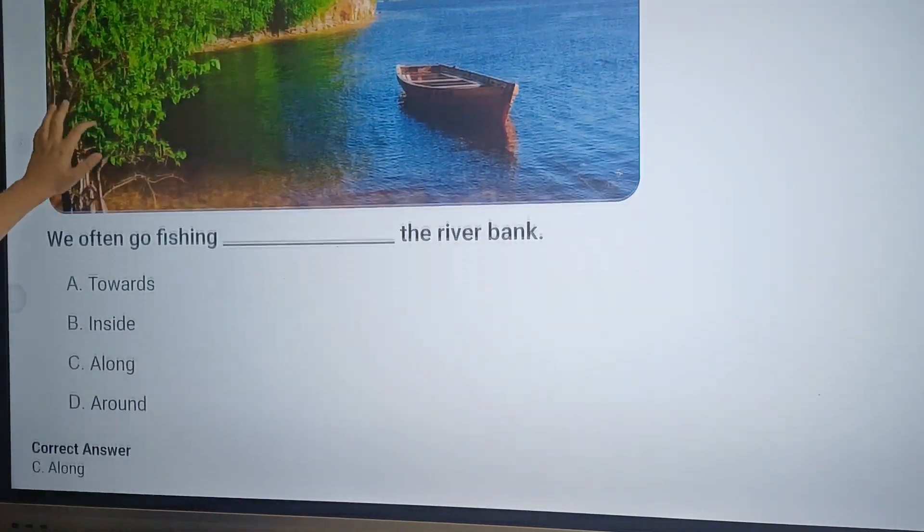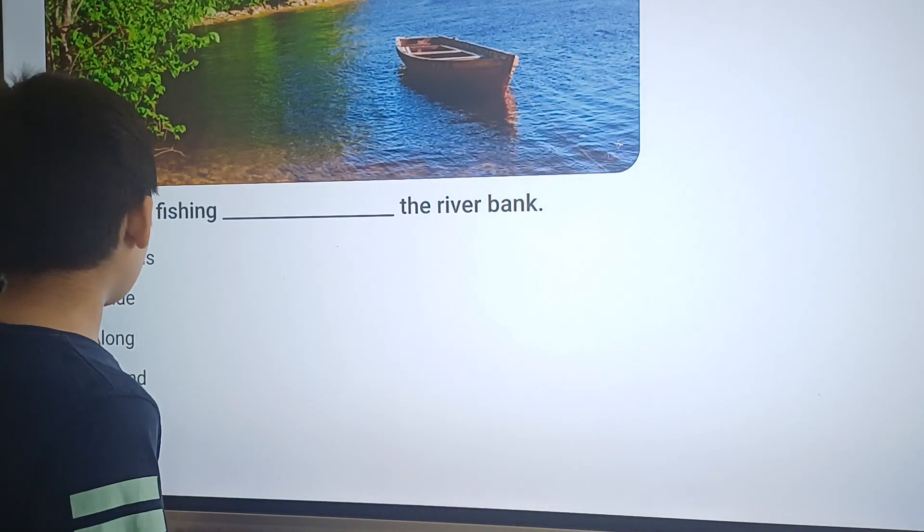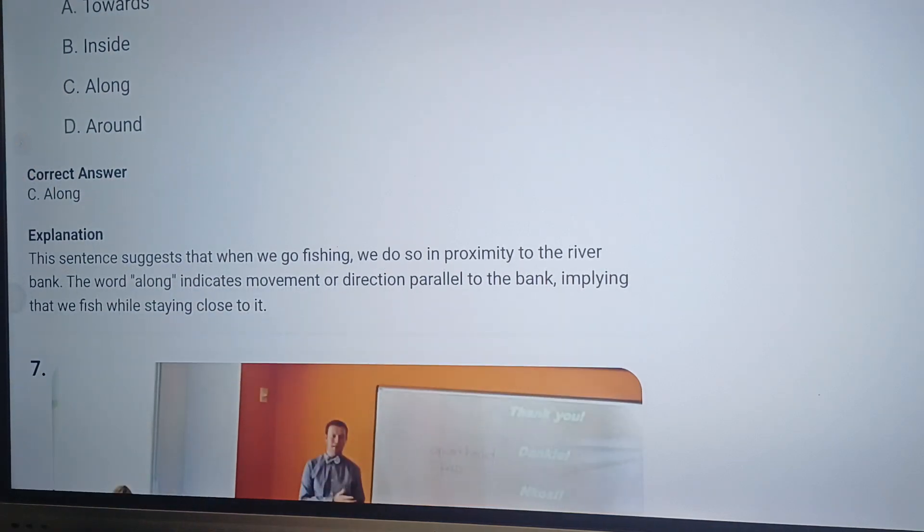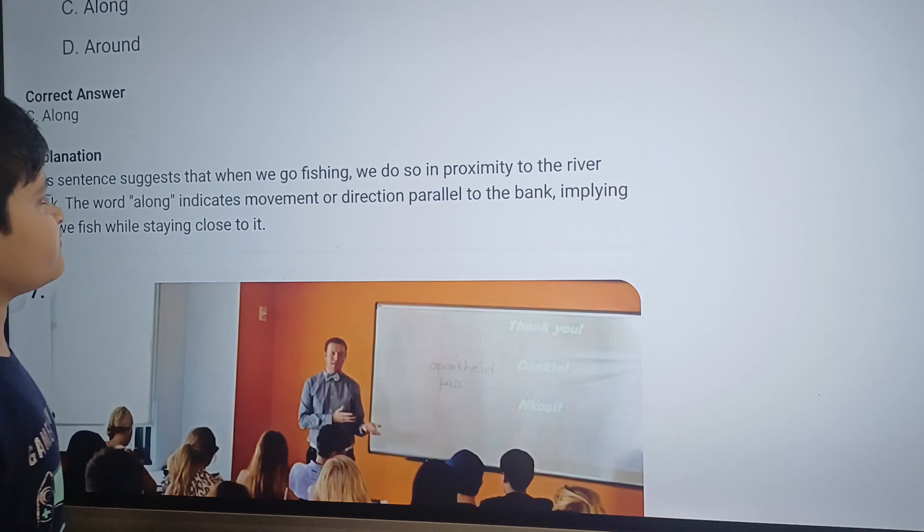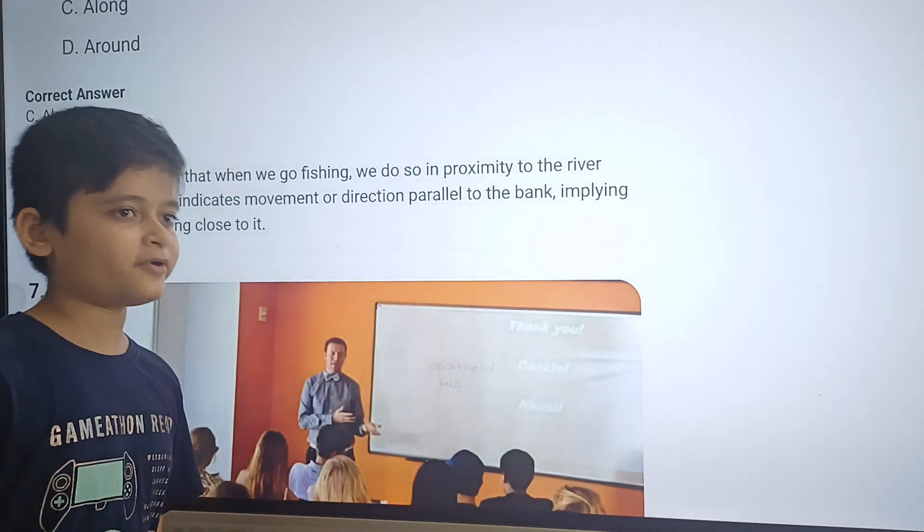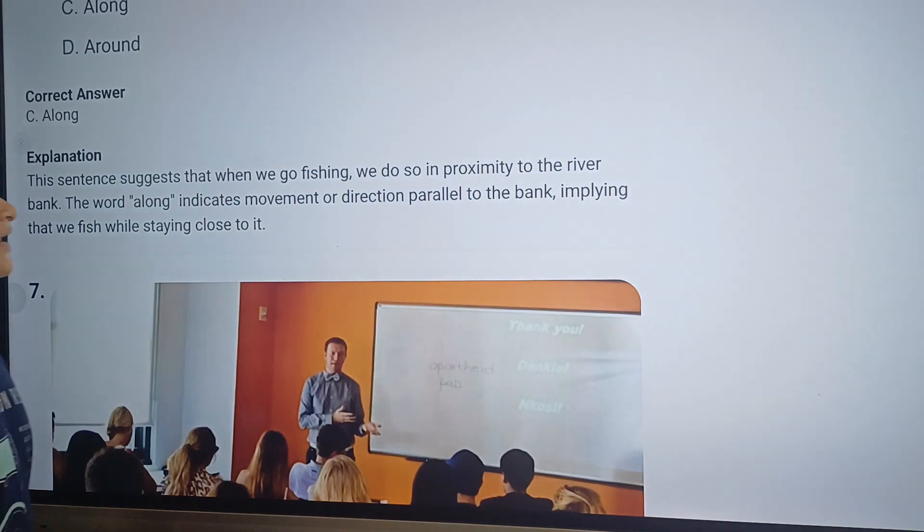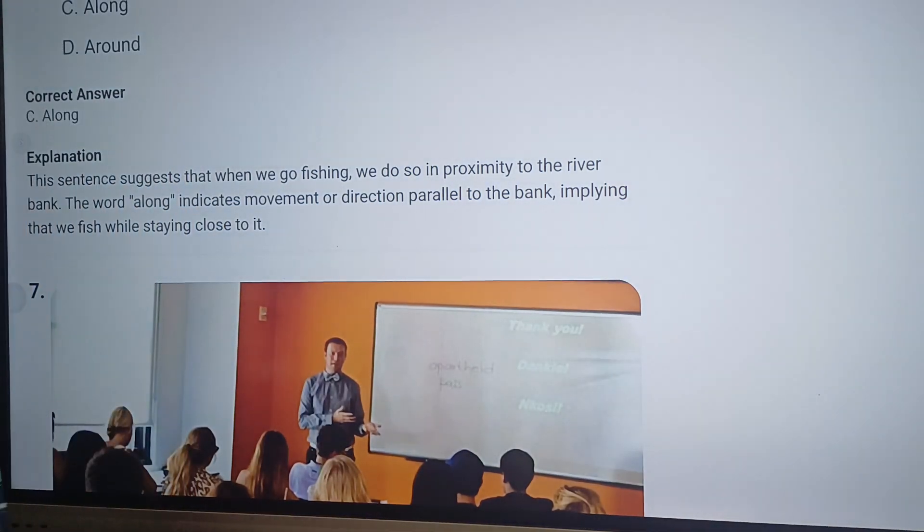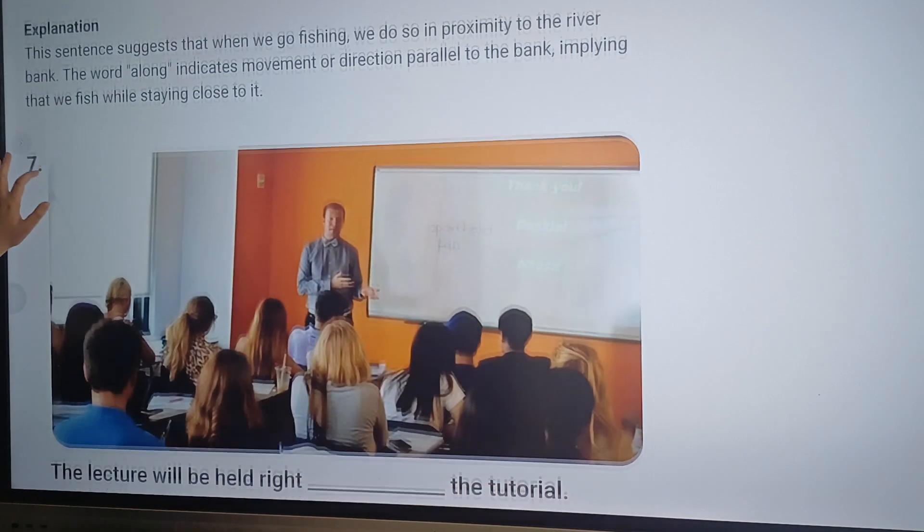The sixth question: We often go fishing dash the river bank. The answer for this one will be along or option C. Here is why: The sentence suggests that when we go fishing, we do so in proximity to the river bank. The word along indicates movement or direction parallel to the bank, implying that we fish while staying close to it.